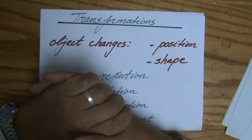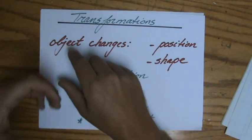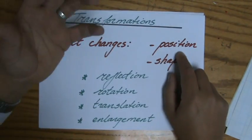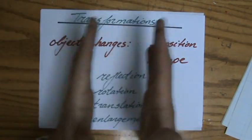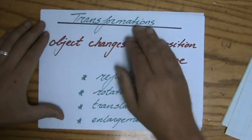Because what is a transformation? It's nothing more than an object, so a particular figure—it could be a rectangle or a triangle—changes either its position or shape. So you have a rectangle, you either change the position or you change the shape slightly. Those are transformations.